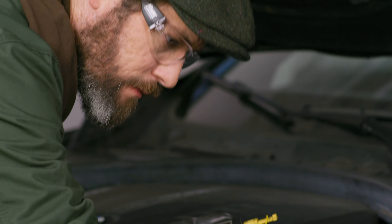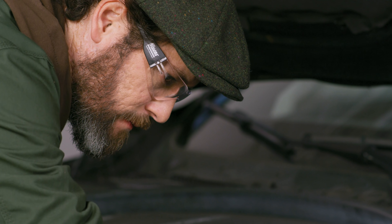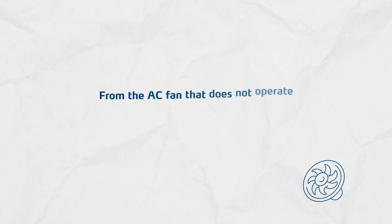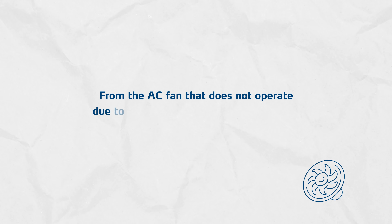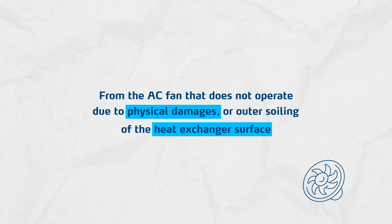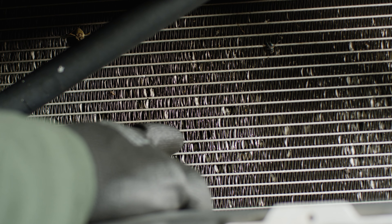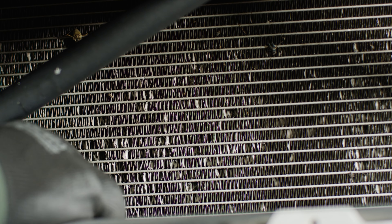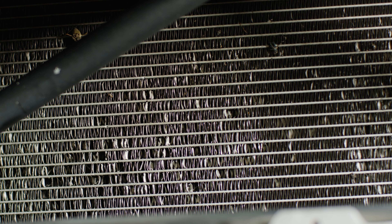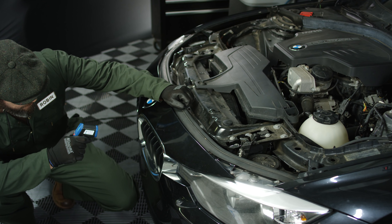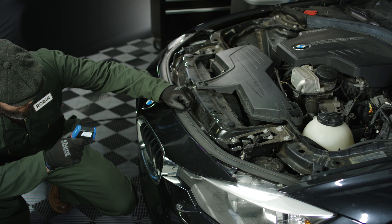If the temperature is way too high, it could also be due to improper operation of the condenser. This can have many potential root causes, from the AC fan not operating due to physical damages, to outer soiling of the heat exchanger surface. Corroded and missing fins are typical for climates with a lot of moisture and where salt is spread during the winter. Seemingly light physical damages can reduce operation of the condenser.